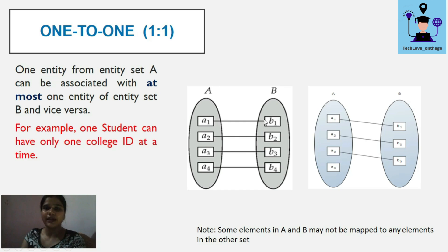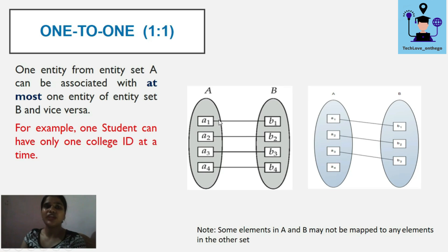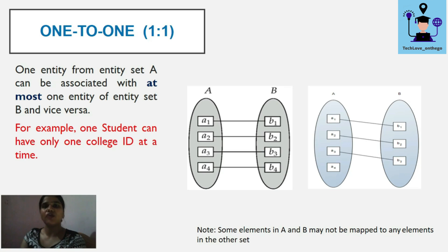For example, if entity set A contains students and entity set B contains IDs, one student can only be connected with one ID. One student cannot have more than one ID, and more than one ID cannot refer to the same student. This is a one-to-one relationship.